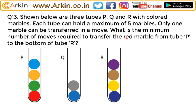There are three tubes P, Q, and R with colored marbles. Each tube can hold a maximum of five marbles, and only one marble can be transferred in a move. The question is: what is the minimum number of moves required to transfer the red marble from tube P to the bottom of tube R? We need to empty the destination and move the marbles blocking the red one.